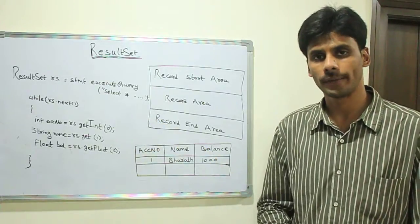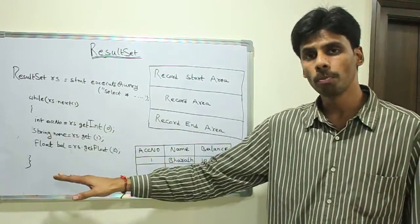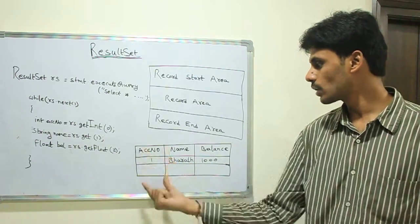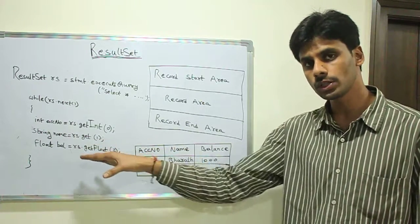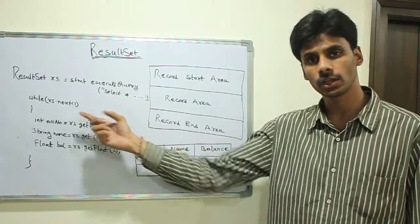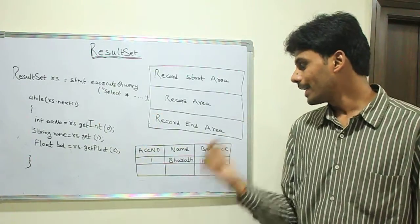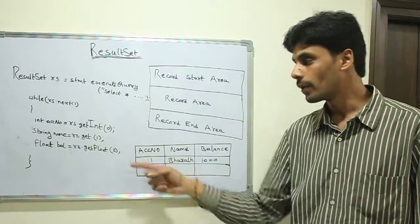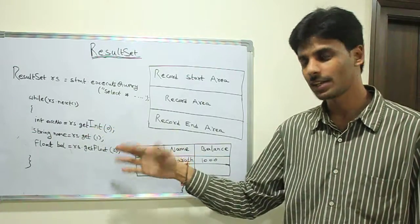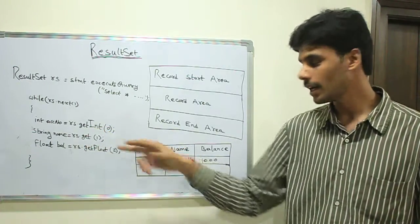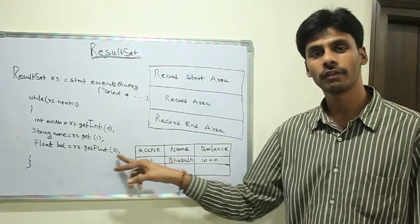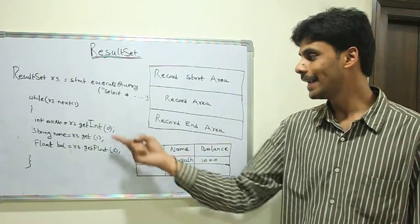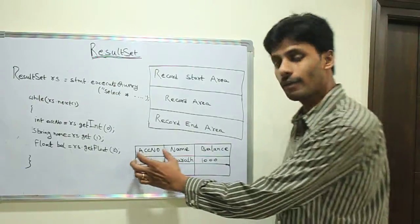We have multiple rows in the ResultSet. When you say next, you get each row. On each of those rows, to get each column value, we have getXXX methods. XXX stands for Int if it is an integer, Float if it is a floating point number. The index starts from zero. To get the value of column 1, I say getInt(0) because this is of type number.